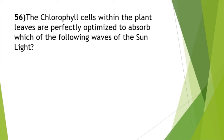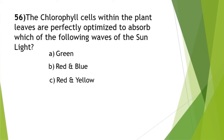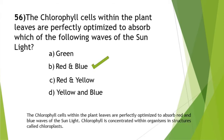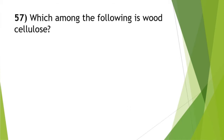Question 56: chlorophyll cells within plant leaves are perfectly optimized to absorb which waves of sunlight? This question can appear even in UPSC prelims. The answer is red and blue. Many students incorrectly write red, blue, and green — that is completely wrong. Only red and blue. Chlorophyll is concentrated in structures called chloroplasts.